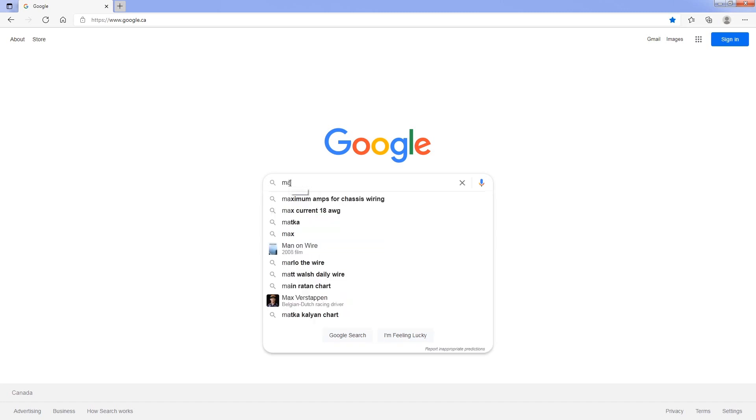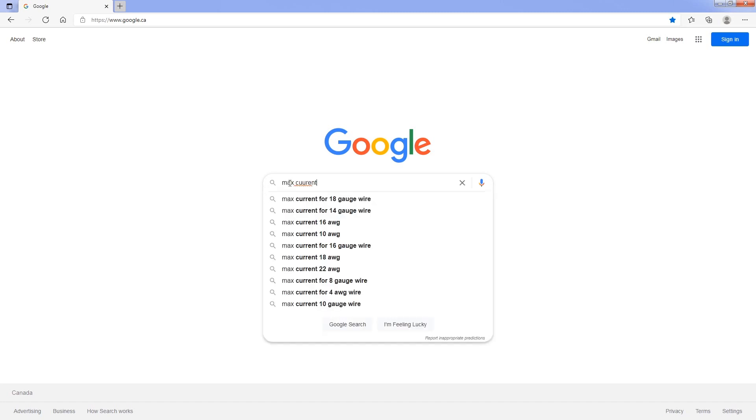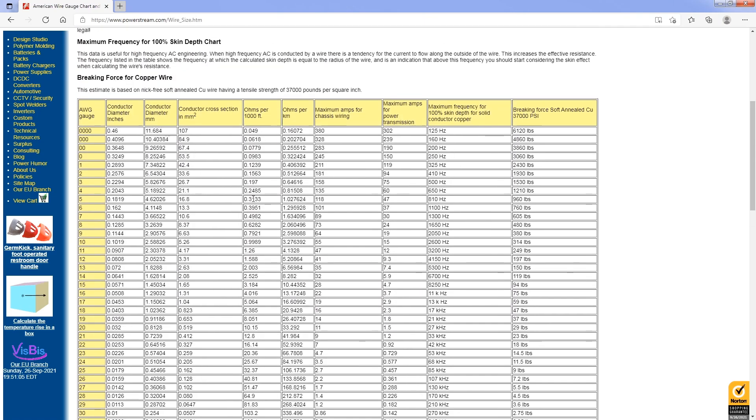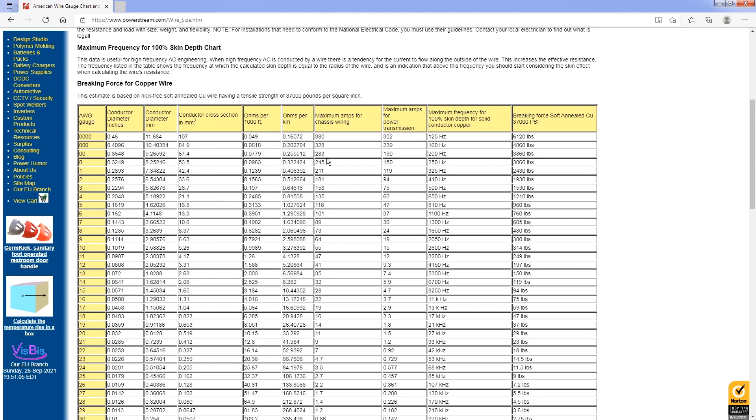In this video, we're going to be talking about the maximum amount of current that you can put through a specific gauge of wire. Now, I'm sure if you've ever been curious about this, you hopped onto Google, threw in your question, hit the enter button, and you got tons of results. And some of those results, you would see a very quick answer of this many amps for this specific gauge of wire. Or you've run into specific charts that tell you exactly what the maximums are for specific wires.